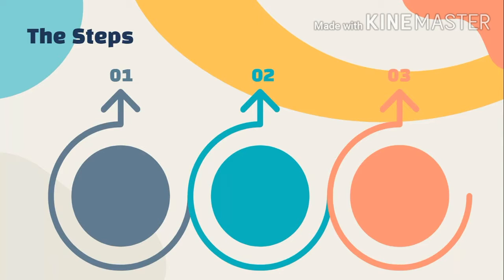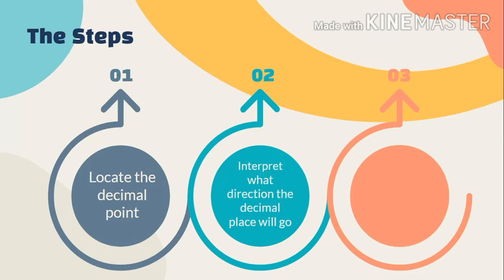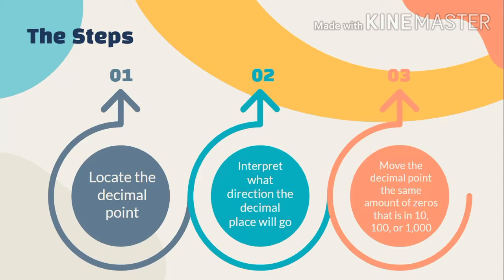Step one: look at the decimal point — find where it is in the number. Step two: interpret what direction the decimal place will go — is it right, left, up, or down? Step three: move the decimal point the same number of places as there are zeros in ten, hundred, or thousand. In ten we have one zero, in hundred we have two zeros, in thousand we have three zeros.